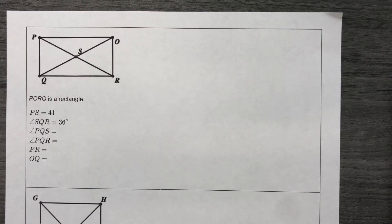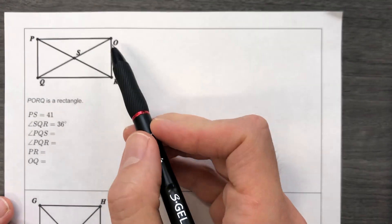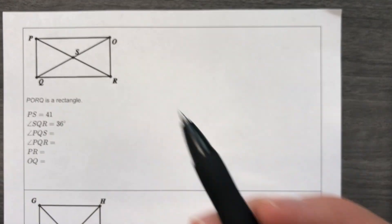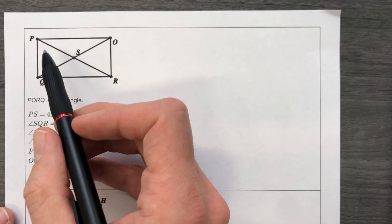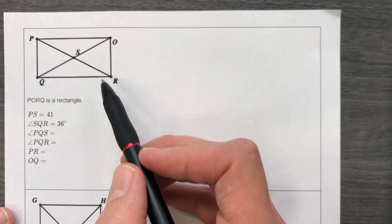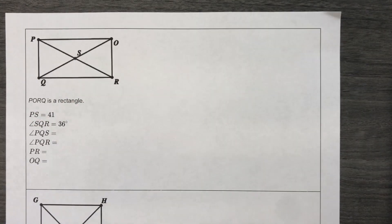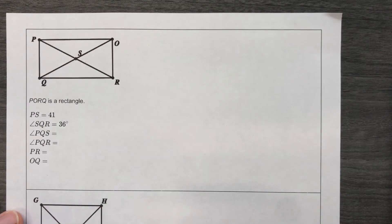P-O-R-Q is a rectangle. It's worth noting that if you're going to name a shape, then you pick a vertex and you just go. Go counterclockwise, go clockwise, it doesn't matter, but I would not call this the rectangle P-Q-O-R. Why are you zigzagging? Just pick one and go in a direction. P-O-R-Q is a rectangle.